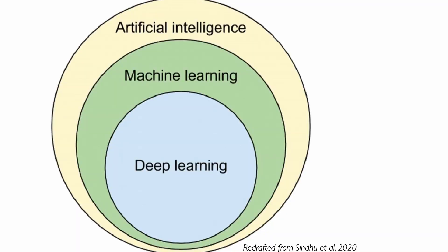Within machine learning, we distinguish between different types. Machine learning is a subset of artificial intelligence — saying AI is machine learning is incorrect, as there's much more to AI. Within machine learning, there is also a subdomain known as deep learning, which focuses on neural networks with many layers and requires a very large amount of data.